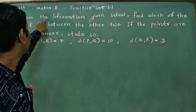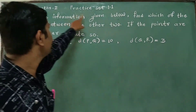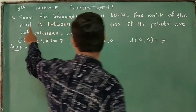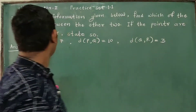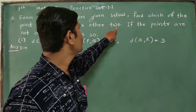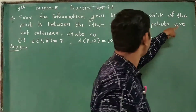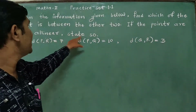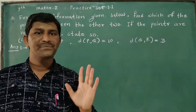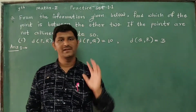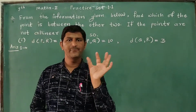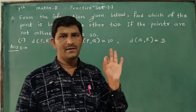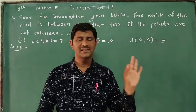From the information given below, which of the points is between the other two? If the points are not collinear, state so. Now, let's look at between these five points and the collinear points.